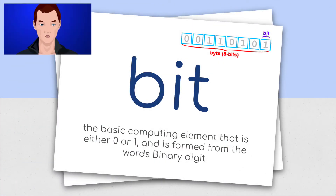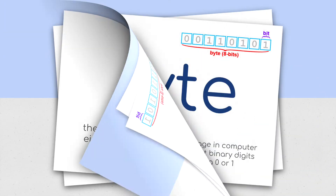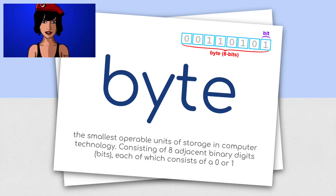Bit: the basic computing element that is either 0 or 1, and is formed from the words binary digit. A byte: the smallest operable unit of storage in computer technology, consisting of eight adjacent binary digits, bits, each of which consists of a 0 or 1.